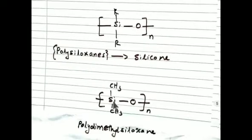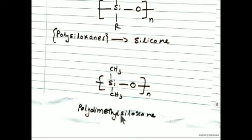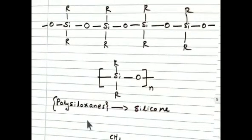CH3 is methyl group, one of the alkyl groups. So this is called polydimethylsiloxane. This polymer has wide variety of application in medical fields, industrial fields, and in everyday life also.